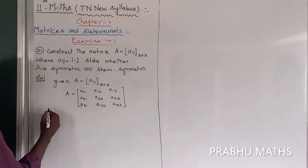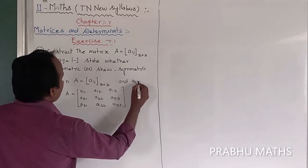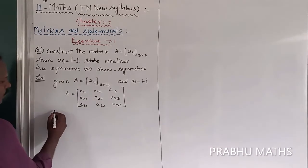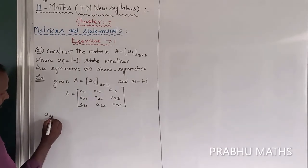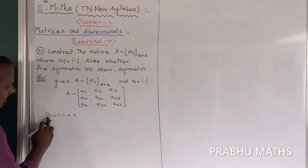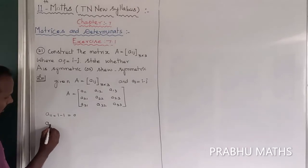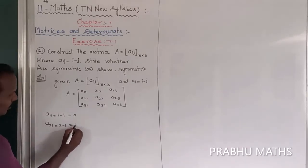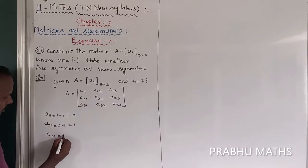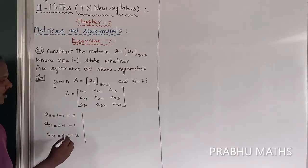Given A(i,j) is equal to i minus j. So the first value A11 is equal to 1 minus 1, which equals 0. Next, A21 is equal to 2 minus 1, which equals 1. Next, A31 is equal to 3 minus 1, which equals 2. That completes the first column.